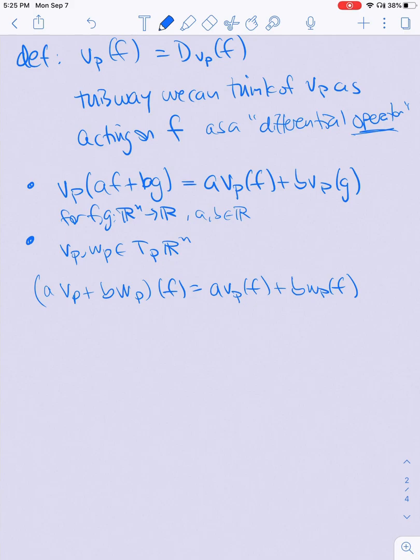That's the same thing as first applying the vectors to f—differentiating in the direction of v_p and w_p—multiplying by a and b, and then adding.